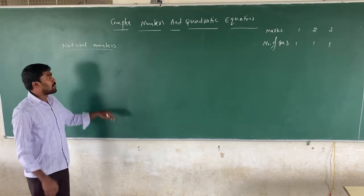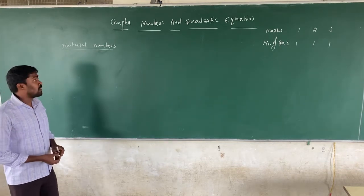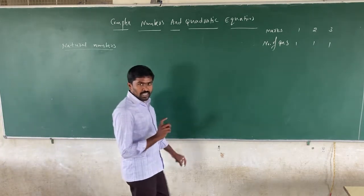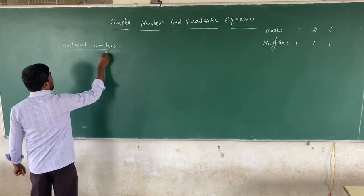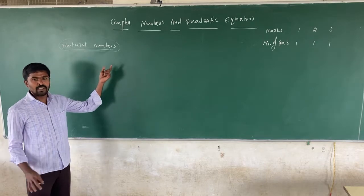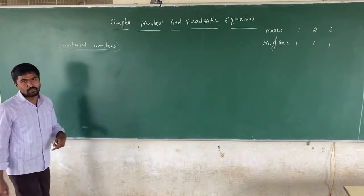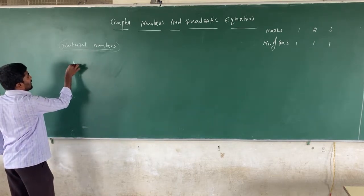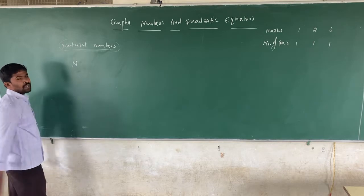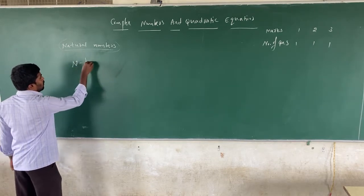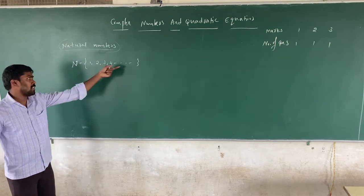What are Natural Numbers? The numbers obtained in the process of counting are called Natural Numbers. The representation of the set of all natural numbers is capital N. The set of all natural numbers is: 1, 2, 3, 4, and so on.